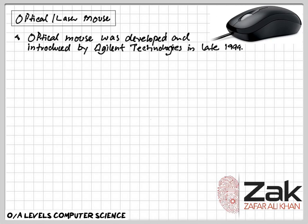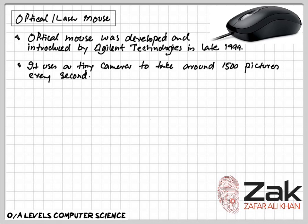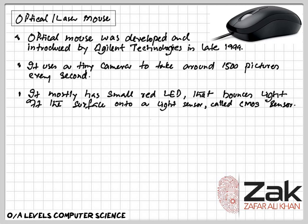The first optical mouse was developed and introduced by Agilent Technologies in late 1999. The optical mouse actually uses a tiny camera to take 1500 pictures every second. Able to work on almost any surface, the mouse has a small red light-emitting diode (LED) that bounces light off that surface onto a complementary metal oxide semiconductor sensor.